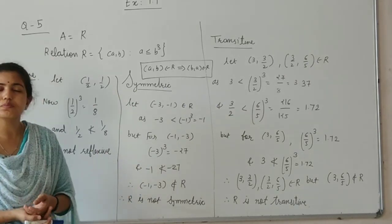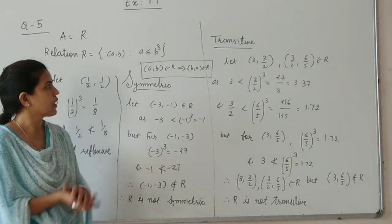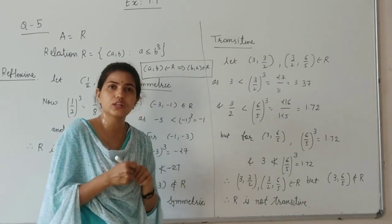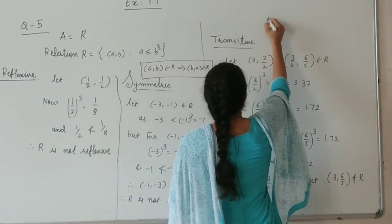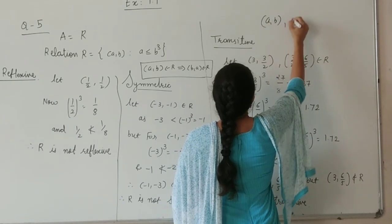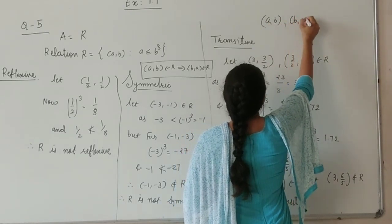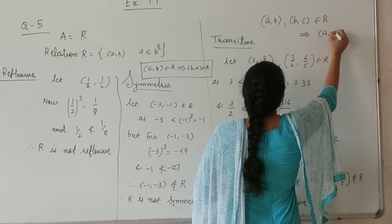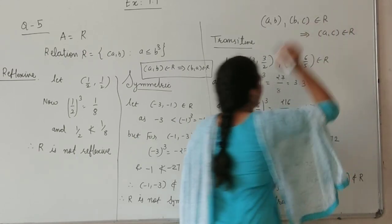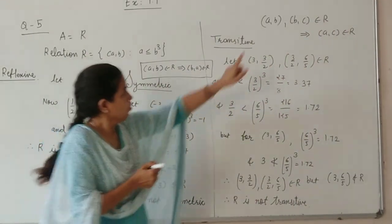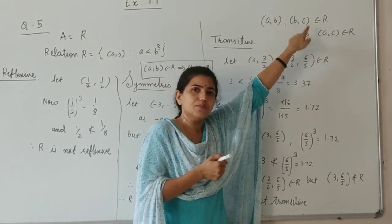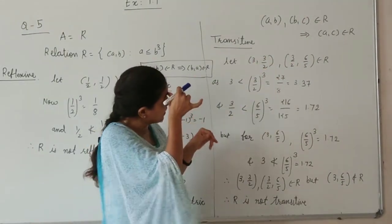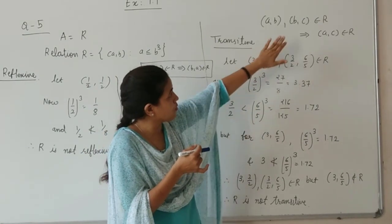You can find many more elements like this. Then comes the transitive check. The condition for transitive: if (a, b) and (b, c) belong to R, then (a, c) belongs to R. So first we have to take a pair of type (a, b) and (b, c). So here I consider (3, 3/2) and (3/2, 6/5).